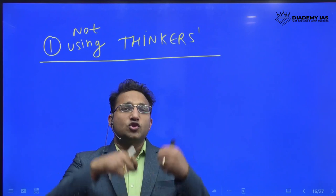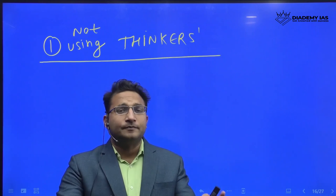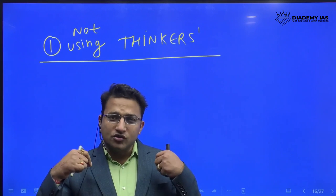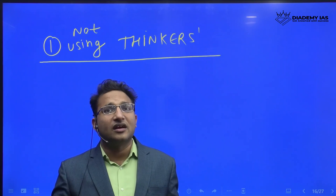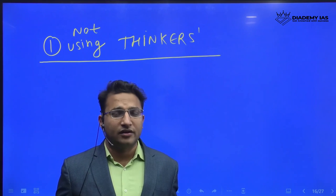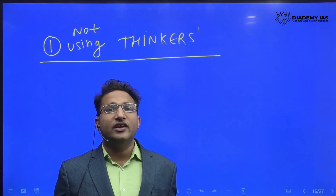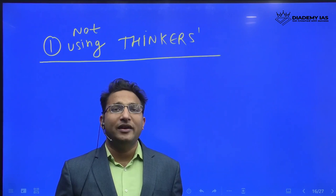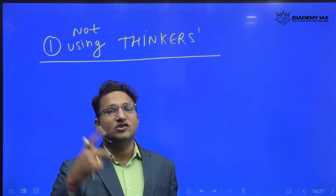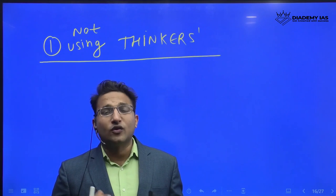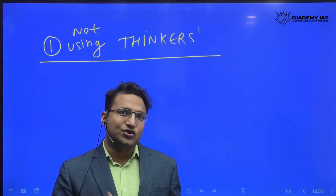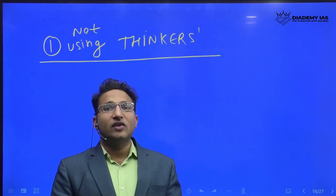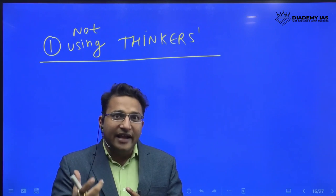Elton Mayo can be used in so many questions in OB. Maslow — so many questions. These are very basic thinkers we are aware about. Theory X, Theory Y — so many questions. Bunsen Stoker in so many questions. Thomas in so many questions. Fred Luthans in so many questions. So have a compilation of the name of the thinker and what their ideas are.